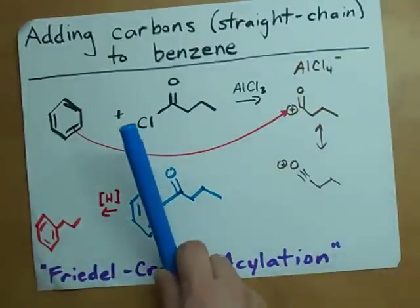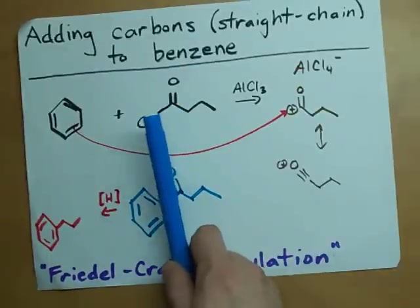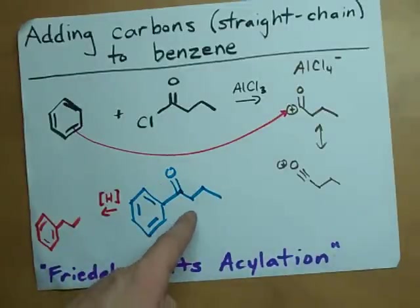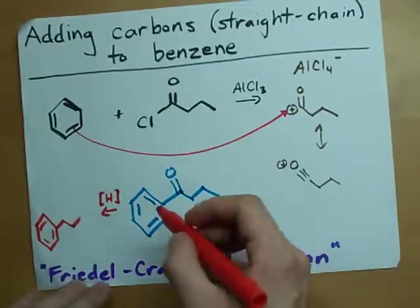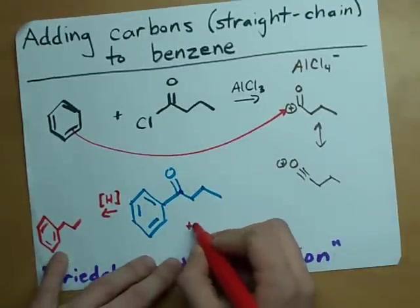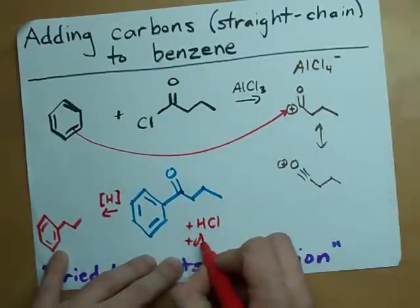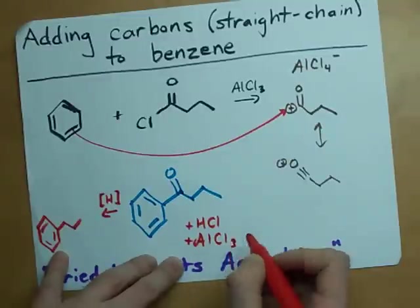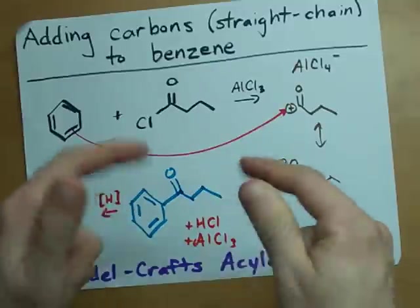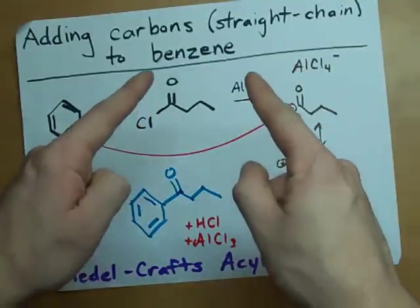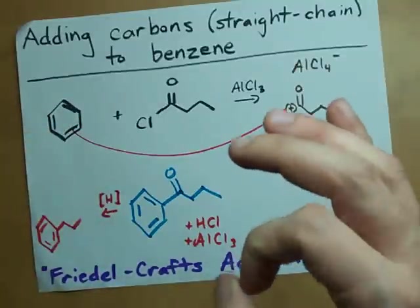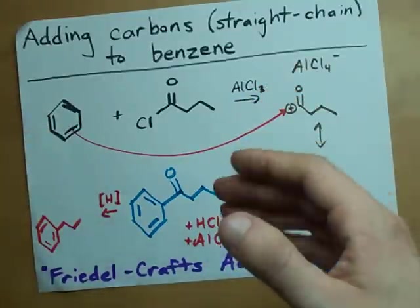You've got to have an acyl chloride to do this. The H that came off of the benzene, when this attached to it, actually removes the Cl from the AlCl4⁻ and regenerates the AlCl3. That's why the AlCl3 is a catalyst here. You want to add straight chain carbon chains to a benzene ring? Use Friedel-Crafts acylation. Highly recommended. Best of luck.